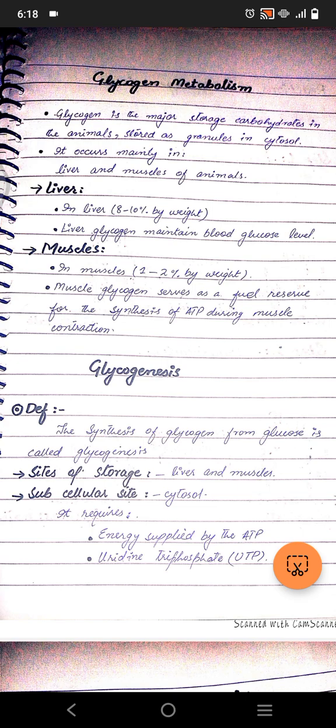Glycogenesis occurs in muscles, because glycogen is stored and used in anaerobic respiration, and in the liver, where it stores excess glucose and is broken down to maintain blood glucose levels. Ten percent of the liver actually contains 10 grams of glycogen. Glycogen is a major storage carbohydrate in animals, stored as granules in the cytosol.